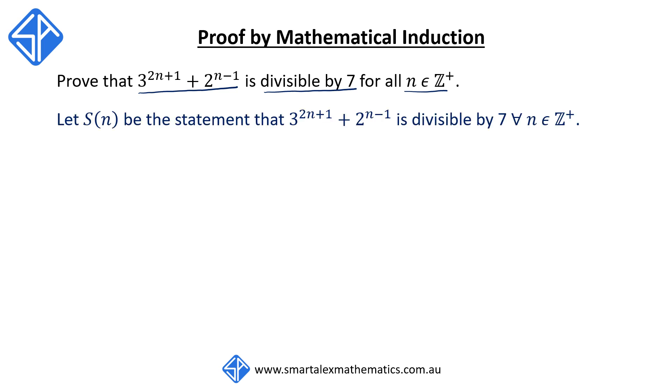So to start off, I'm going to say, let S(n) be the statement that 3 to the 2n plus 1 plus 2 to the n minus 1 is divisible by 7 for all n that are element of positive integers. In other words, we can rewrite this as 3 to the 2n plus 1 plus 2 to the n minus 1 is equal to 7 times M, where M is also a positive integer.